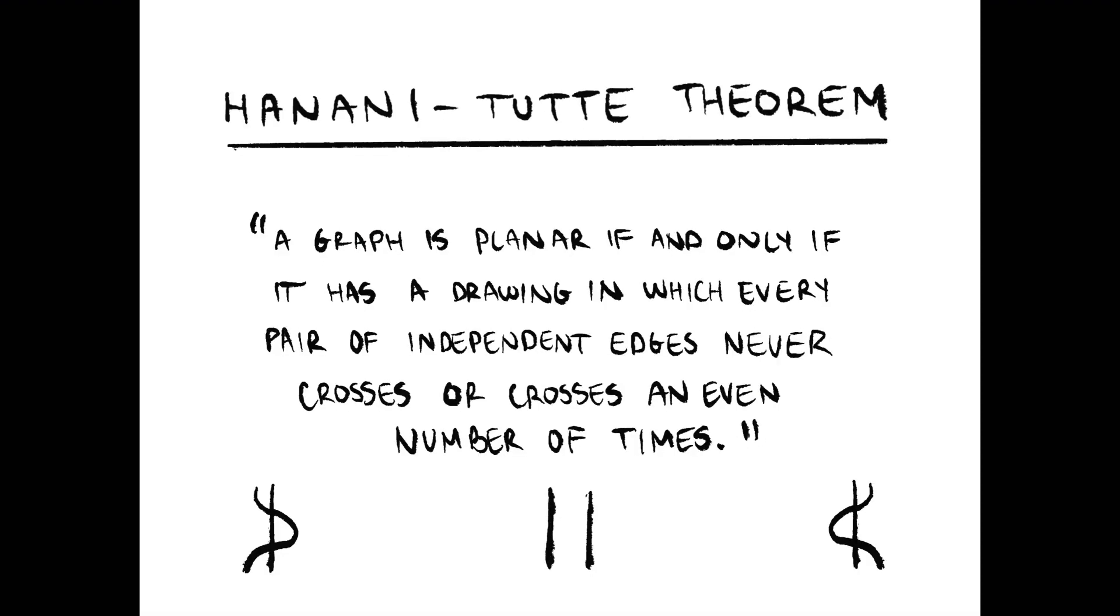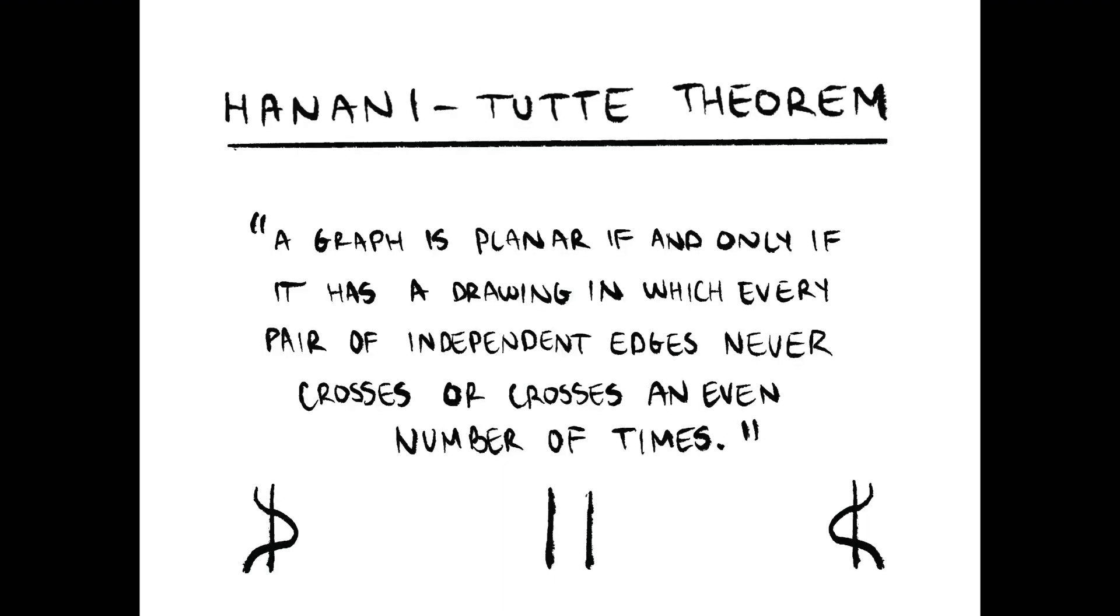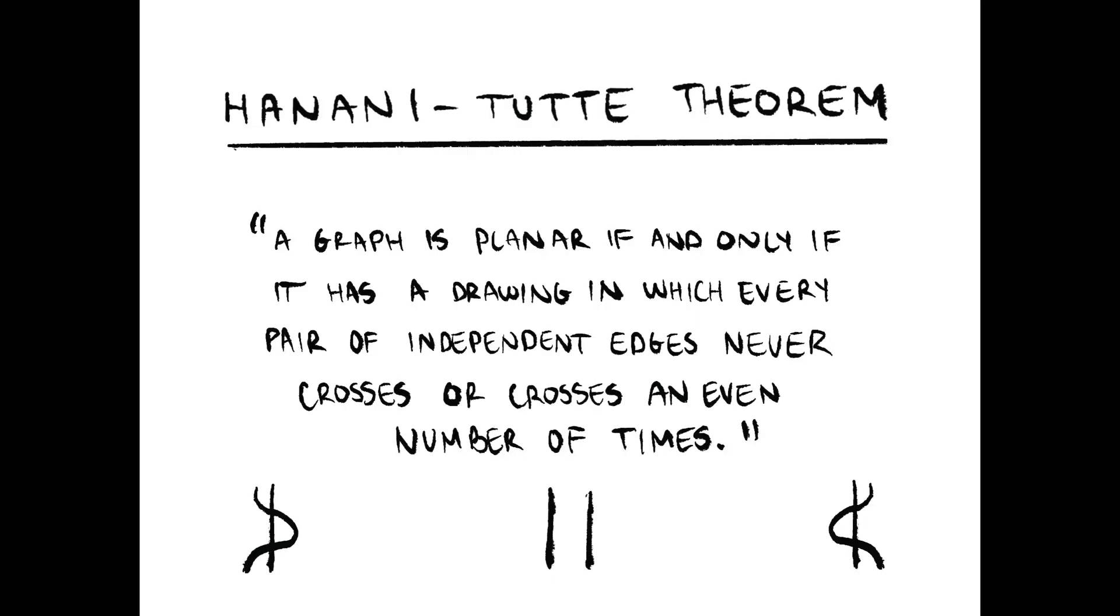First, let's define what a planar graph is. Planar graphs are graphs that can be drawn such that none of their links cross on a plane or on a sphere. For a sphere, you can think of Earth's countries on a globe as this is also a type of map.